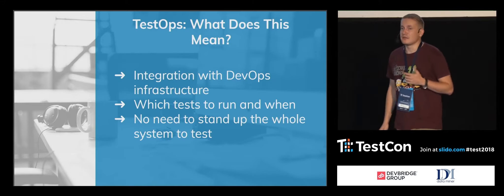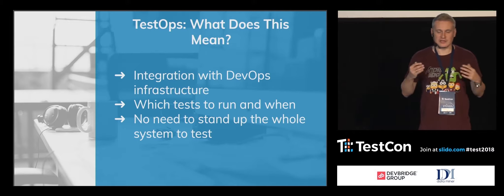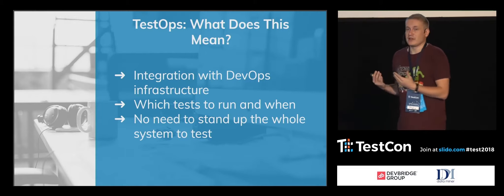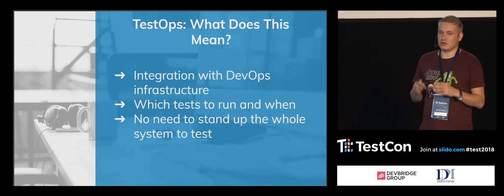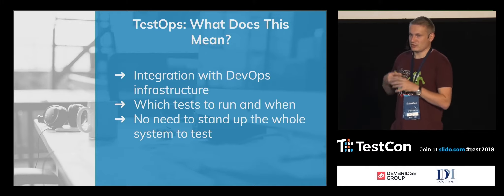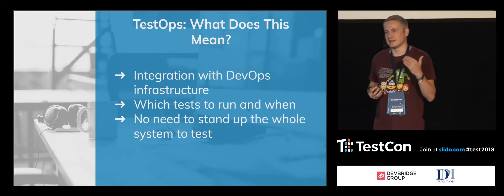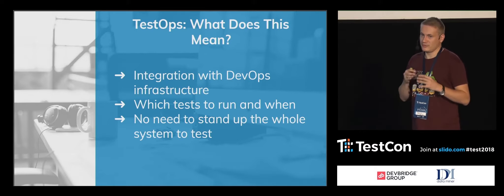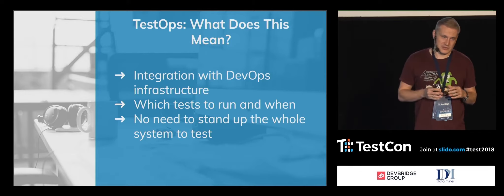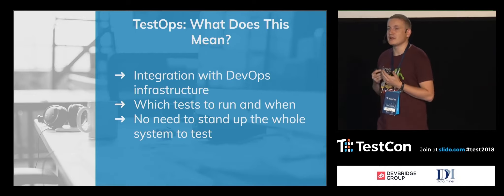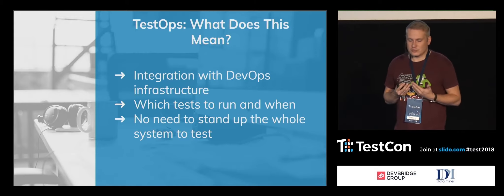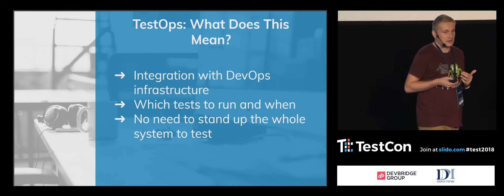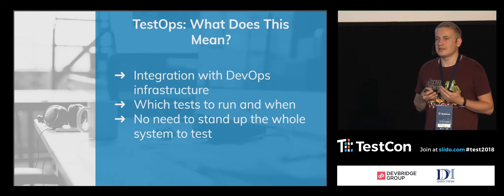That was quick because I don't have a lot of time to talk about DevOps — I want to show real examples. For me, TestOps really means integration with DevOps infrastructure, not creating or maintaining it, but combining your testing work with the DevOps part of the job. It's also about which tests to run and when — not just staging environment, but you can use production environment and run a subset of tests or just the monitoring part — with no need to stand up the whole system every time, because we can use real data and real parameters.